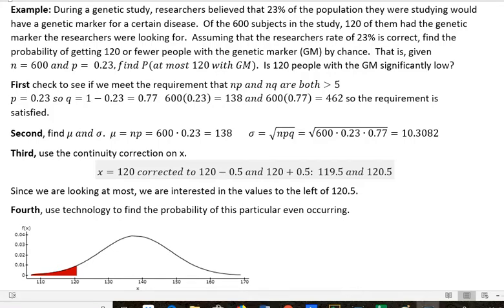Hi, it's Carly McAvoy. In this example, we're looking at using a normal distribution to approximate probability for a binomial distribution.